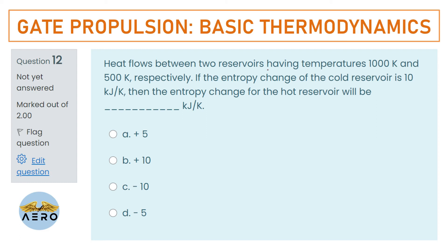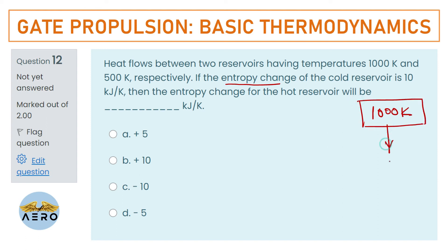Heat flows between two reservoirs having temperatures 1000 K and 500 K respectively. If the entropy change of the cold reservoir is 10 kJ/K, find the entropy change for the hot reservoir. Heat flows from the high-temperature reservoir at 1000 K to the low-temperature reservoir at 500 K.